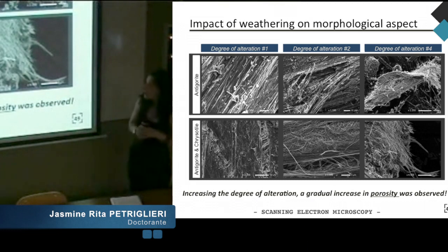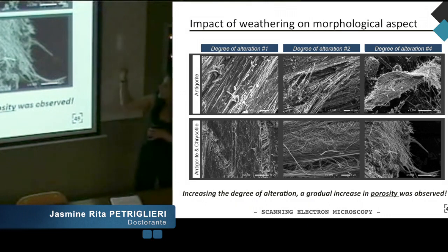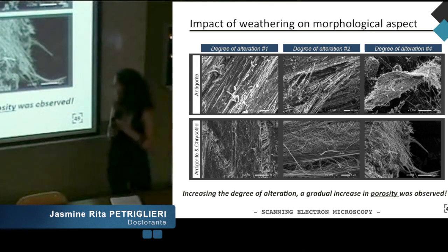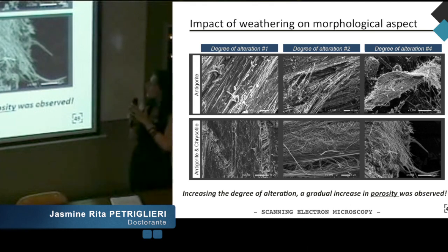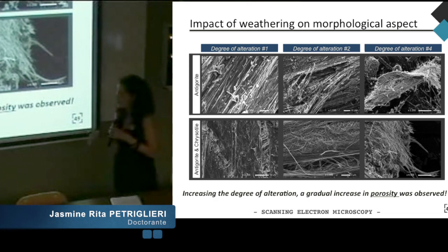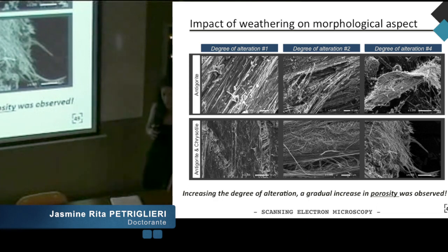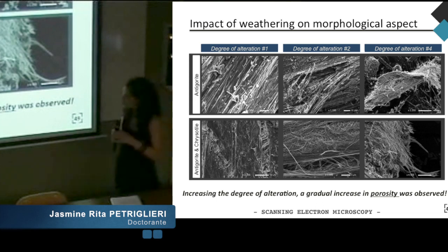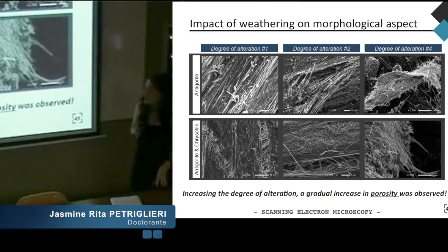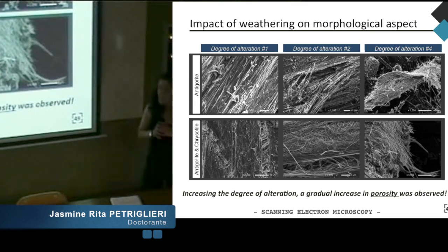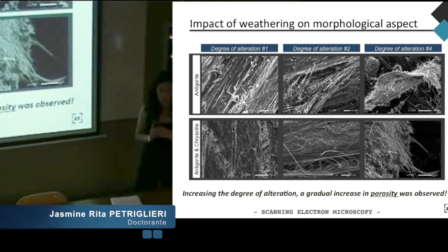Evaluating the weathering effect on morphological aspects for antigorite and mixed-phase antigorite–chrysotile, we observed that increasing the degree of alteration from one to four, a gradual increase in porosity is observed. The space between the fibro-lamellae increased, correlated with the increase in the state of alteration. In the case of antigorite–chrysotile samples, this factor was more important because the penetration and circulation of fluids and water between the fibrous lamellae is facilitated in the chrysotile, opening the structure and generating the release of fibers into the environment.